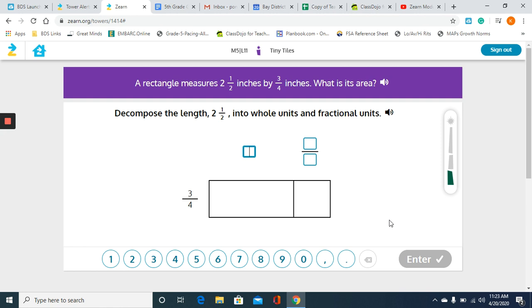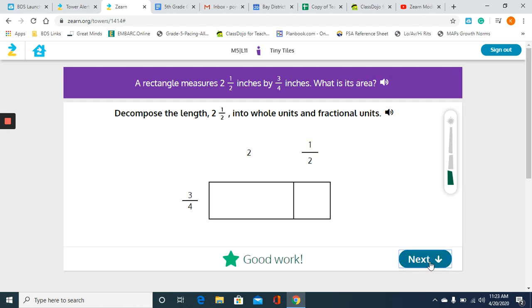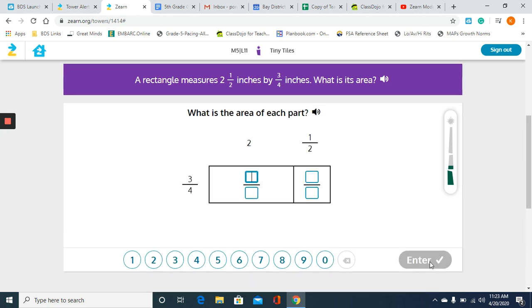So we're going to decompose the length 2 and 1/2 into whole units and fractional units. So my whole number is going to be 2, my fractional part is 1/2. Now they want us to find the area of each part, which just means again, imagine there's a little x right here that's telling us to multiply. So 3/4 times 2, just put your whole number over 1. So 3 times 2 is 6, 4 times 1 is 4, 3 times 1 is 3, 4 times 2 is 8.